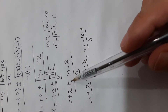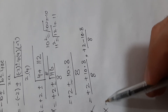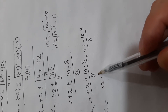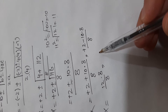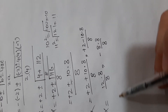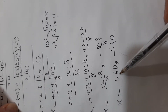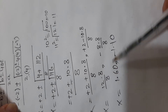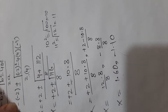Using the positive value: 2 plus 10.8 is 12.8, divided by 8. Using the negative value: 2 minus 10.8 is minus 8.8, divided by 8. So the answers are approximately 1.60 and minus 1.10. This is the solution for question 2 part D.